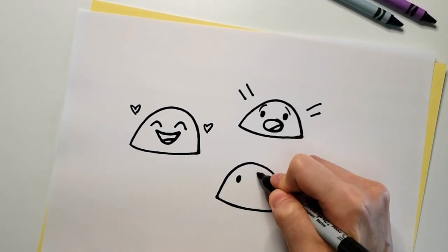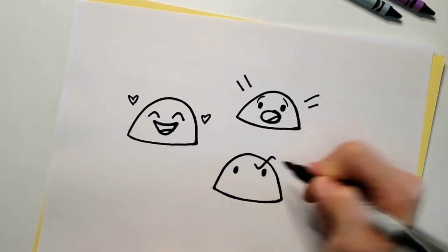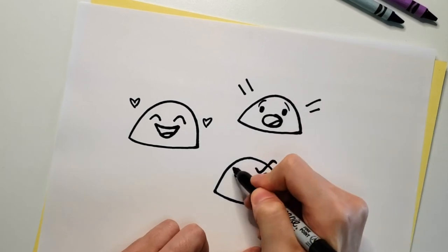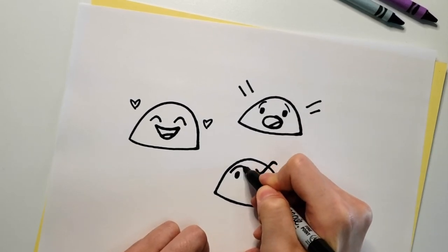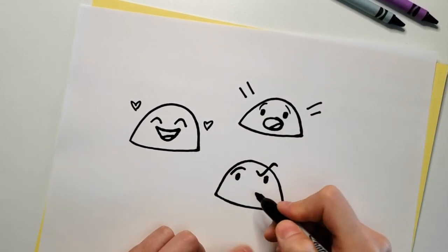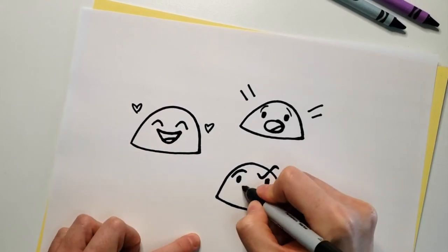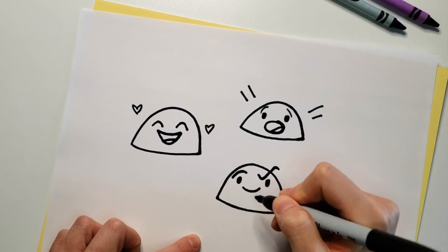So you want to take one eyebrow and it's almost like a check mark, like this. See that? And then the other eyebrow can just be a curvy line, and now we'll do a smile similar to this one and you'll see how fun that looks.